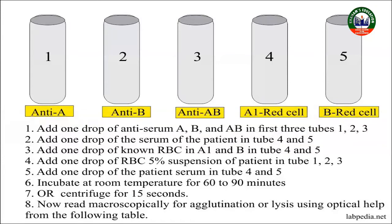For the detection of blood grouping of a person, 3 drops of blood are taken at different spots on the slide. After placing the blood drops, antiserum A is added to spot 1, antiserum B on spot 2, and antiserum D on spot 3.